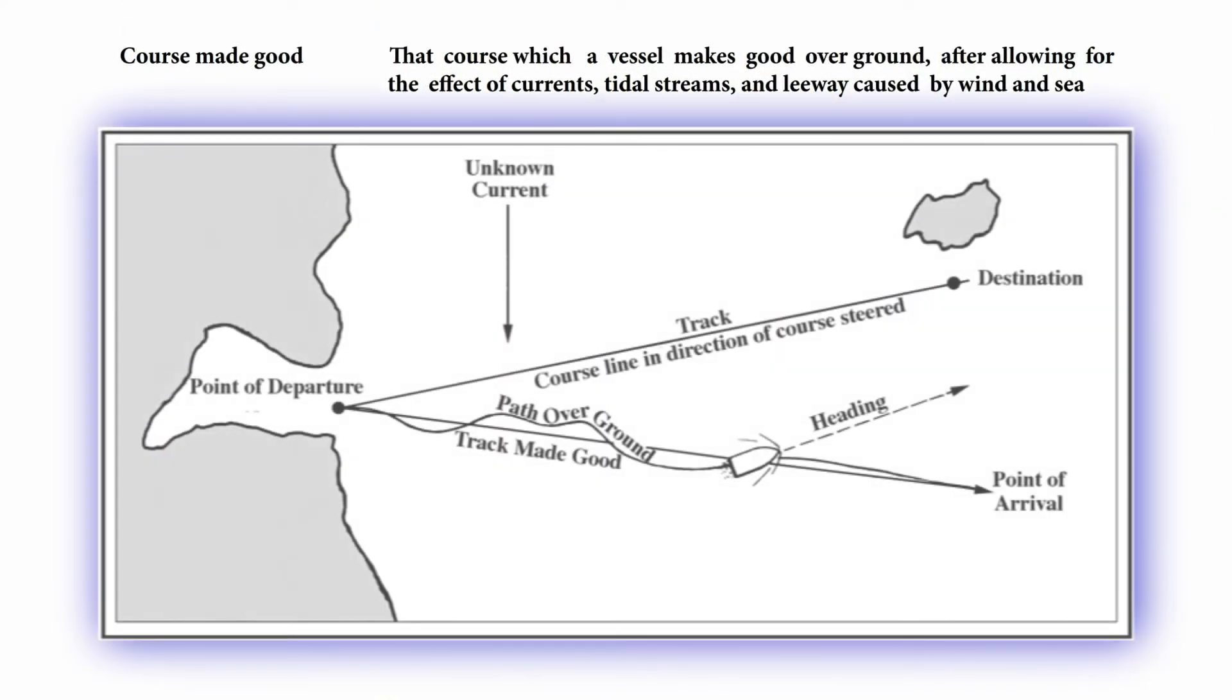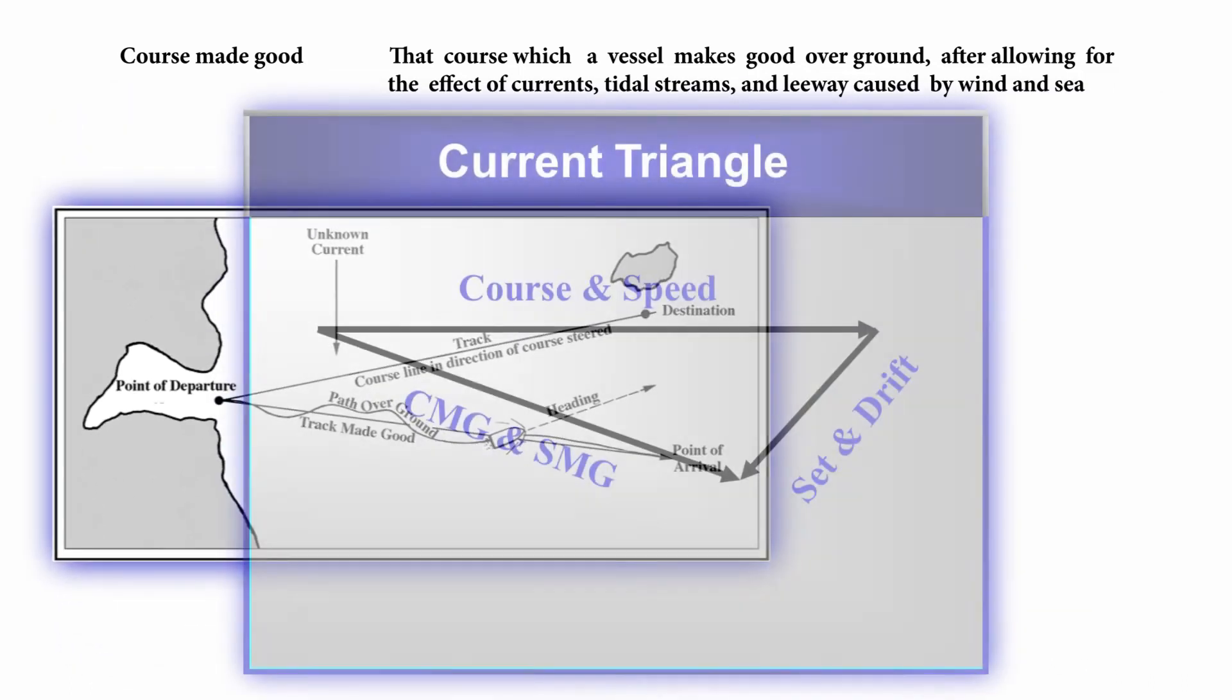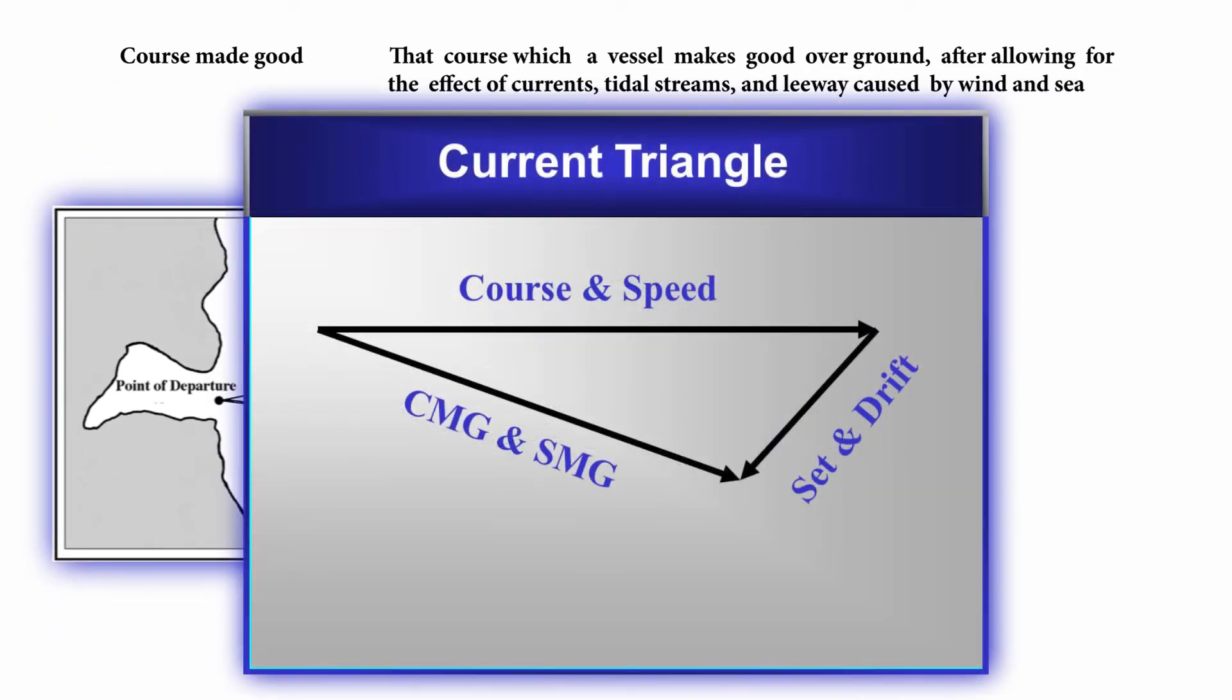Course made good: this is that course which a vessel makes good over ground after allowing for the effect of currents, tidal streams, and leeway caused by wind and sea.